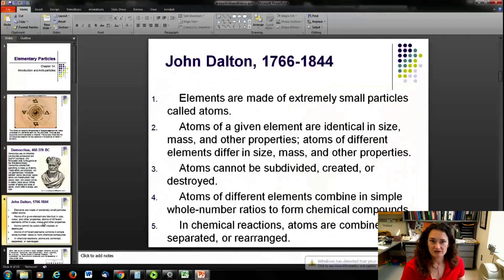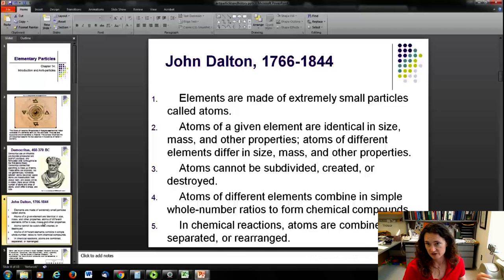The next probably really big advance in thought came from John Dalton, who's considered to be the father of chemistry. He lived 1766 to 1844. And he came up with these kind of five postulates that were very accurate. Elements are made of extremely small particles called atoms. Atoms of a given element are identical in size, mass, and other properties. And atoms of different elements differ in size, mass, and other properties. They can't be subdivided, created, or destroyed. Atoms of different elements combine in simple whole number ratios to form chemical compounds. And in chemical reactions, atoms are combined, separated, and rearranged. So, I mean, I think this is awesome. He's right about everything except number three.